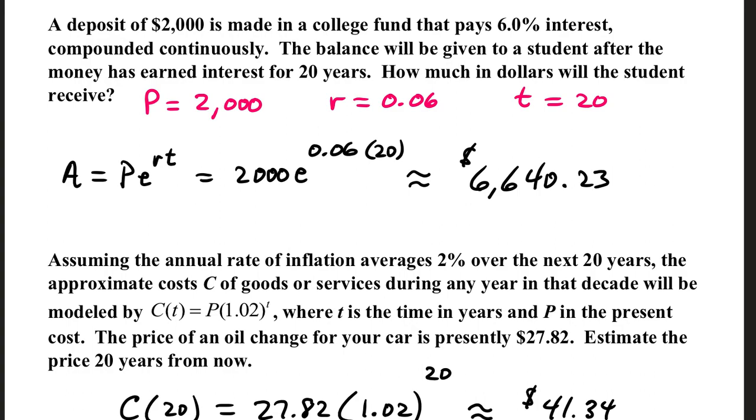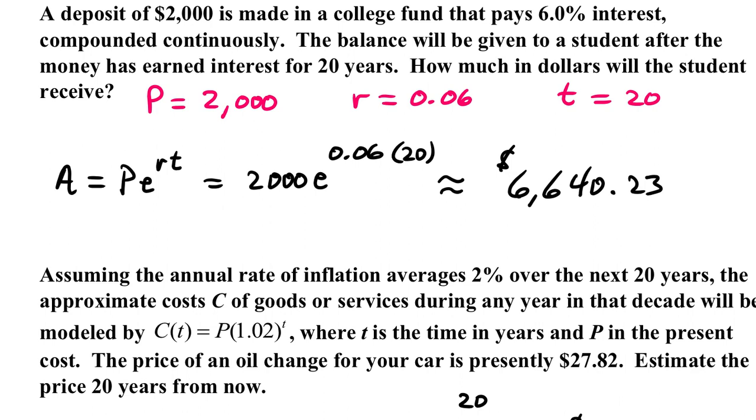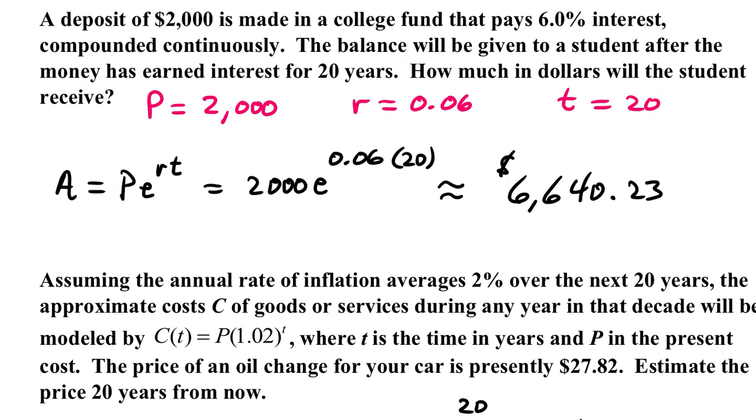A deposit of $2,000 is made in a college fund that pays 6% interest, compounded continuously. The balance will be given to a student after the money has earned interest for 20 years. How much money in dollars will the student receive? Compounded continuously tells us we have to use this formula, A equals P times E to the RT.